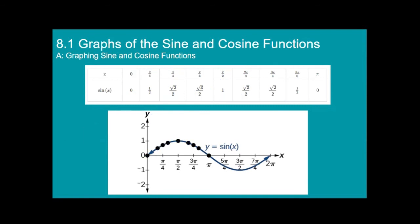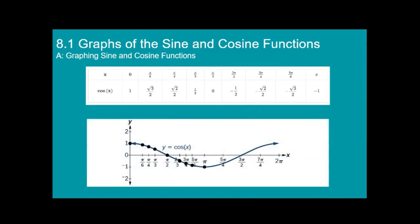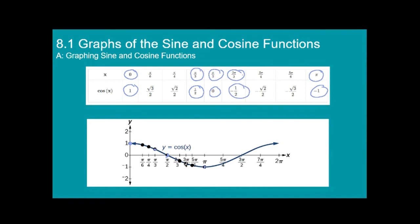Now let's see what happens if we do cosine. Here we have the values of cosine from zero to pi. At x equals zero, cosine equals one — so that would be this point here. At pi over three it's one half. At pi over two it's zero. At two pi over three it's negative one half. And at pi it's negative one. Once again we get this wave shape, but notice it looks different. This is a cosine wave.